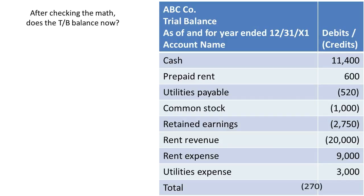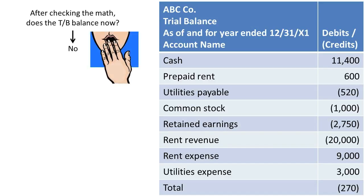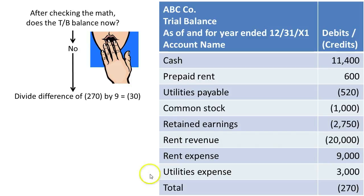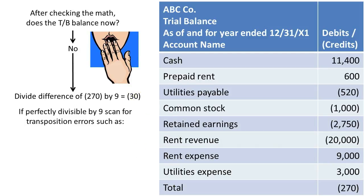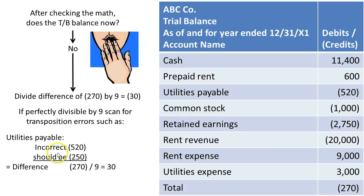We check our math on the trial balance and discover it doesn't balance, showing $270 more credits than debits. We can divide that difference of $270 by 9, and we get 30. Once again, there are no extra decimal places — it's perfectly divisible by 9 — so in this case we can scan for transposition errors, such as in Utilities Payable.